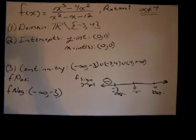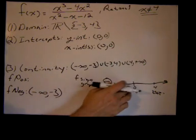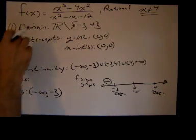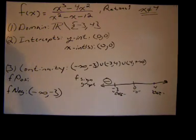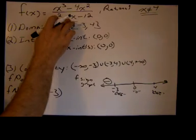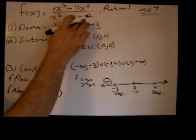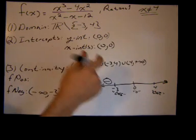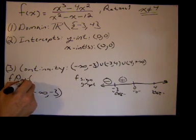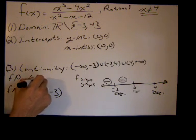From negative 3 to 0, I'll use x equals negative 1. Negative 1 cubed minus 4 times negative 1 squared equals negative 5 in the numerator. The denominator: negative 1 squared minus negative 1 minus 12 equals negative 10. So I get a negative over a negative, which yields a positive number. Therefore, f is positive on the interval from negative 3 to 0.